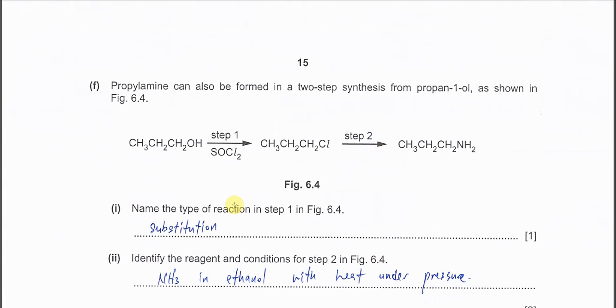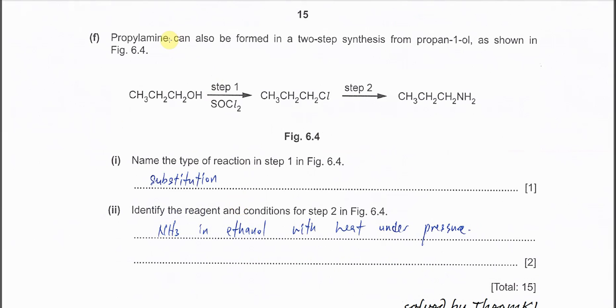Part (f): Propylamine can also be formed in two-step synthesis from propan-1-ol. The propan-1-ol first reacts with SOCl2, and the OH group will be substituted by chlorine. Then this haloalkane will further react with ammonia to form this amine. Name the type of reaction in step 1. Very easy—since the OH is being replaced by chlorine, we call this substitution. The OH is substituted by chlorine, so it's a substitution type.